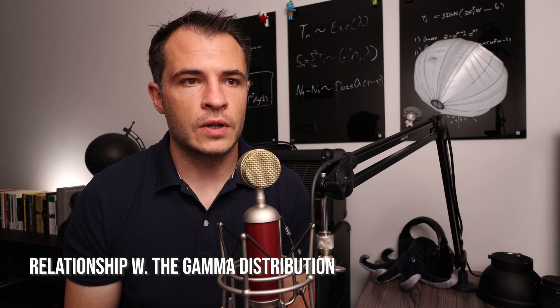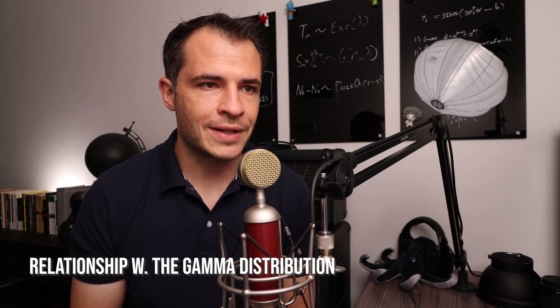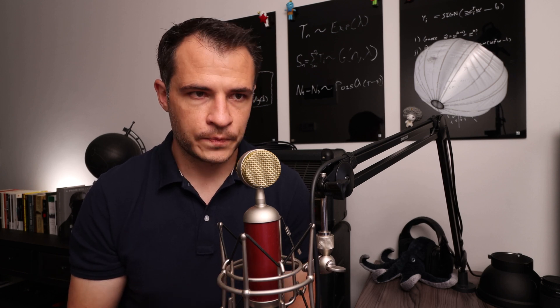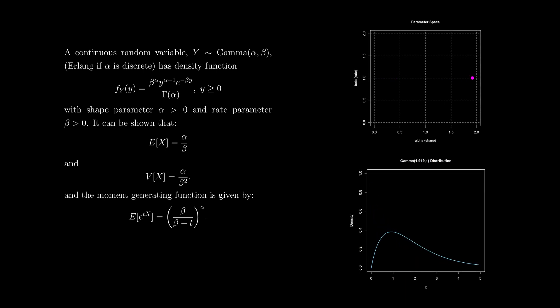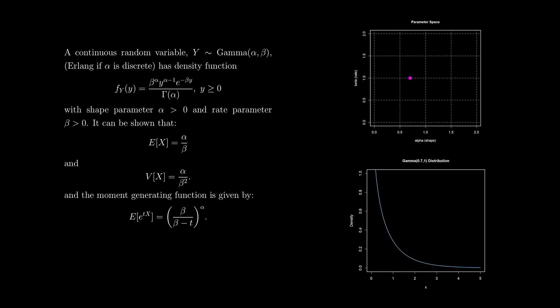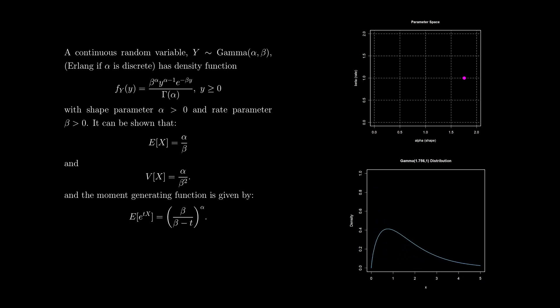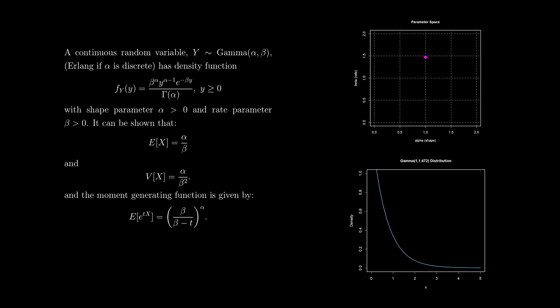Another useful result is the relationship between the exponential distribution and the so-called gamma distribution. A continuous random variable y distributed gamma(alpha, beta) — or Erlang if alpha is discrete — has density function [beta^alpha * y^(alpha−1) * e^(−beta*y)] / Gamma(alpha). It has support on the positive reals, with shape parameter alpha > 0 and rate parameter beta > 0. It can easily be shown that the mean is alpha/beta, and the variance is alpha/beta^2.